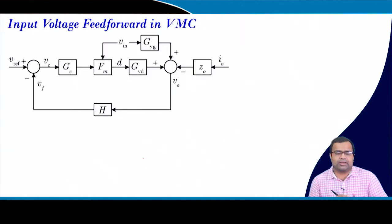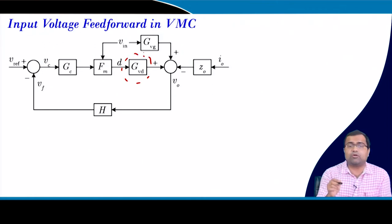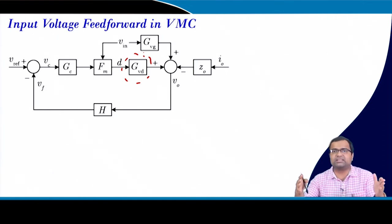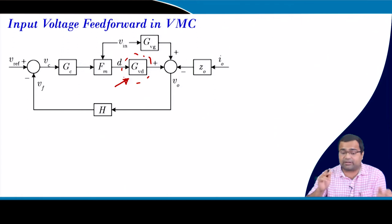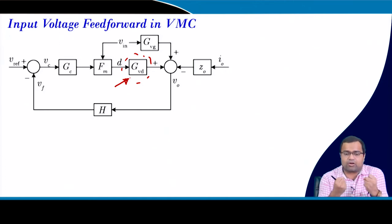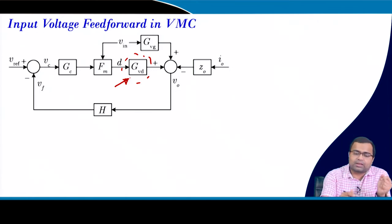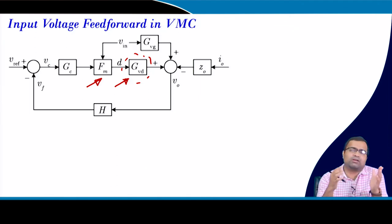For input voltage feed forward, we already know about the loop gain. There is a transfer function that captures the frequency response behavior of the output voltage with change in duty ratio. The modulator gain, if using a sawtooth waveform with peak voltage VU, is 1/VU. The controller compensator design — with crossover frequency and phase margin — will be discussed in subsequent lectures.